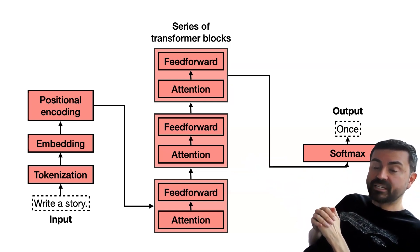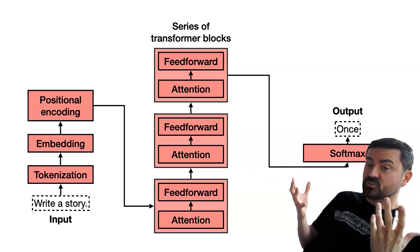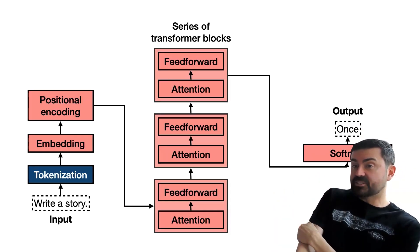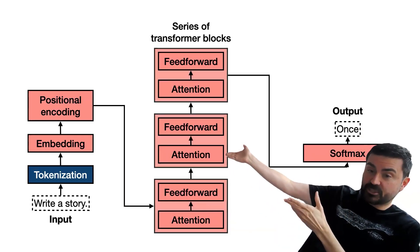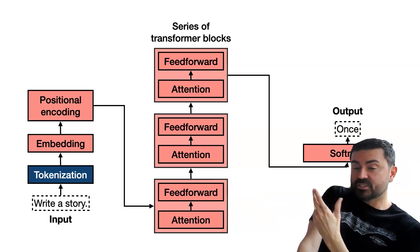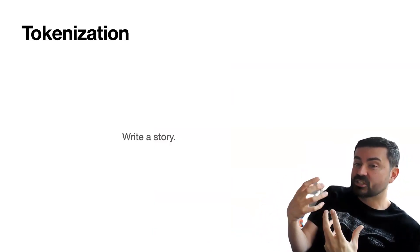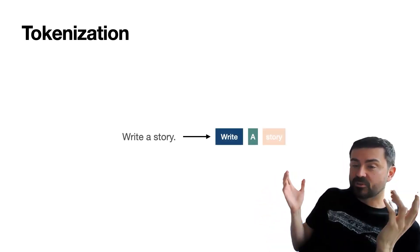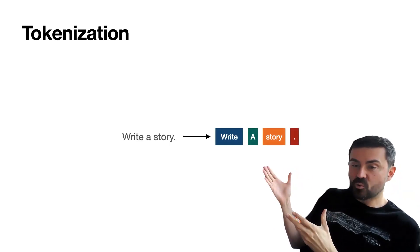So if your prompt is 'write a story,' the output is 'once' — the next word that comes after 'write a story.' Let's get to tokenization, which is the first piece of the architecture. Tokenization works as follows: let's say you have the sentence 'write a story.' As I said, the model doesn't look at the word 'write,' the word 'a,' and the word 'story' as words — it actually looks at them as tokens.